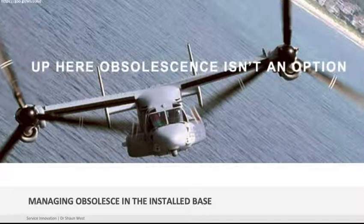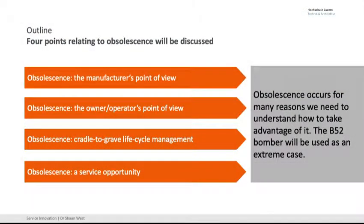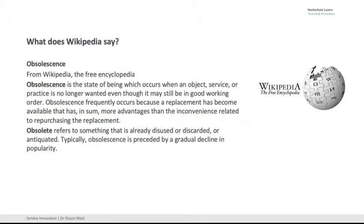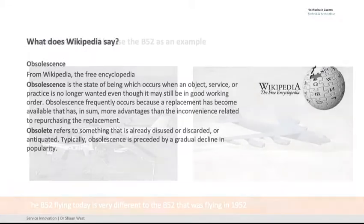Now, obsolescence. You know where your equipment is — and things become obsolete. Boeing have an exceptionally good website on this currently, on the B-52 bomber. I like it because it's very well documented. I'm going to look at it from the manufacturer's point of view, the owner-operator's point of view, cradle-to-grave life management, and the service opportunities that gives us. Obsolescence — look it up on Wikipedia for a great, simple definition.